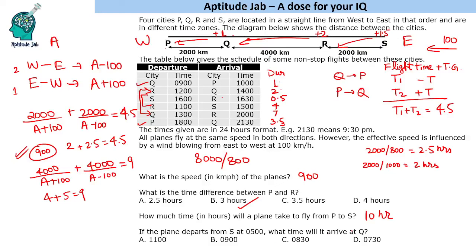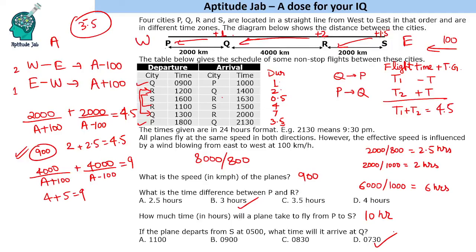If a plane departs from S at 5 AM, what time does it arrive at Q? S to Q is 6000 km, and going east to west the speed is 1000 km/h, so flight time is 6 hours — arriving at 11 AM in S-local time. But Q is 3.5 hours behind S (1.5 plus 2), so we subtract 3.5 from 11, giving 7.5, which is 7:30 AM at Q.